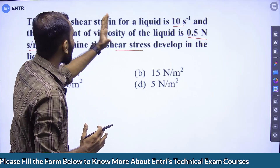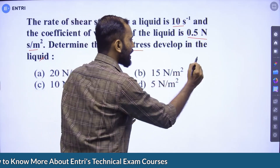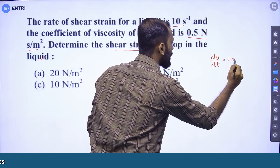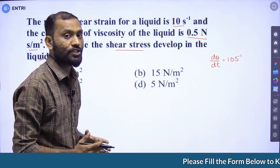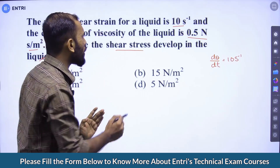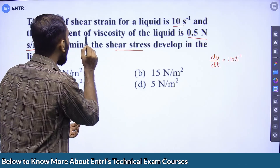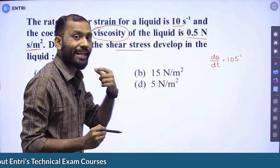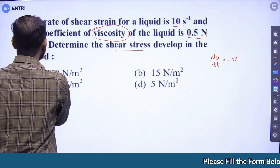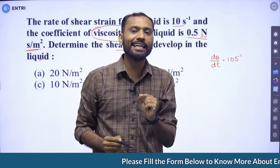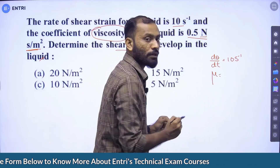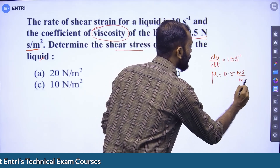The rate of shear strain, that is d-theta by dt, is 10 per second. D-theta by dt is the rate of shear strain, rate of angular deformation. The coefficient of viscosity of the liquid is 0.5 Newton second per meter square, which is the SI unit of dynamic viscosity. So dynamic viscosity mu equals 0.5 Newton second per meter square.